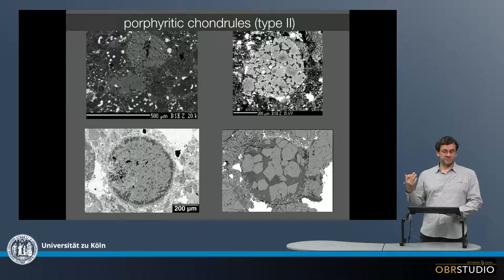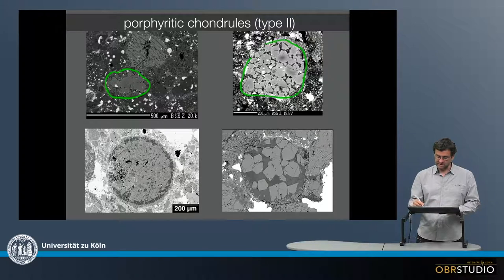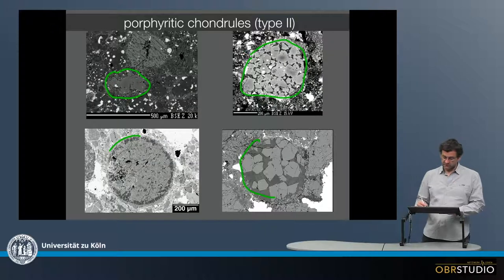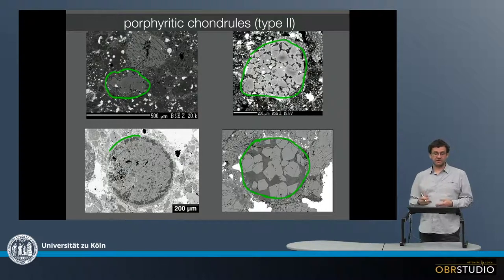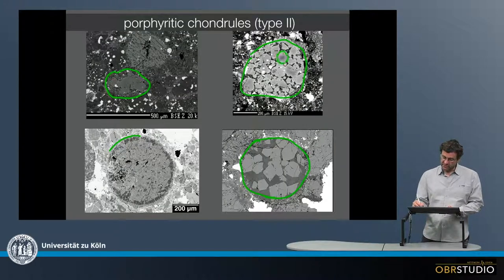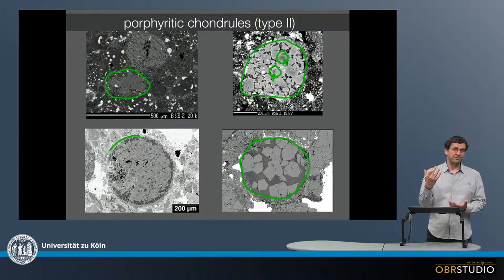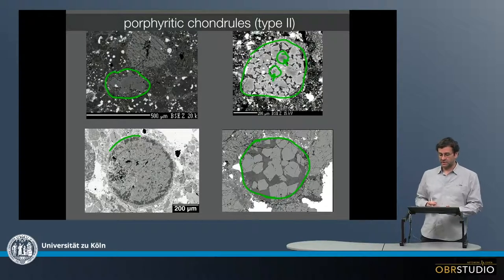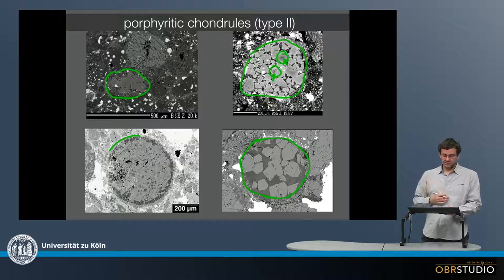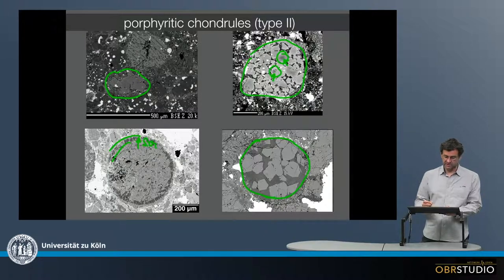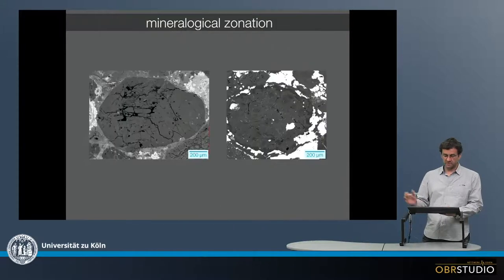Then there are porphyritic chondrules of type 2. These look rather similar to type 1 porphyritic chondrules, but the silicates are a little brighter because they now contain iron. Some olivine grains have a more grayish core — this is a relic core of an olivine grain that initially was more magnesium-rich, and then iron was added to this olivine, thereby making it more iron-rich. Type 2 chondrules typically have less opaque phase content than type 1 chondrules. In one example here, there is a ring, but in this case it is not pyroxene but SiO₂ — this is more rare but can apparently occur.